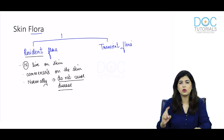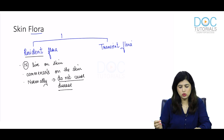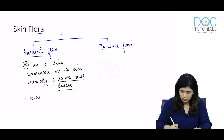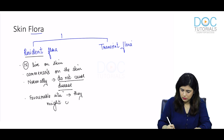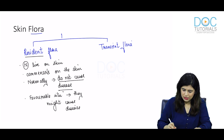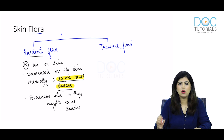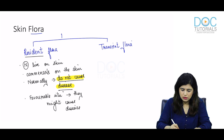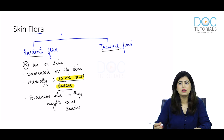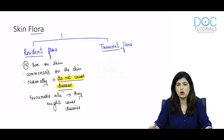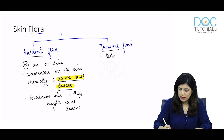They normally do not cause disease, but in certain situations which may be favorable to the bacteria, they might cause disease. However, the transient flora — as the name suggests — are transient; they don't normally live here. They come and go, but when they come, they are pathogenic and they cause disease.